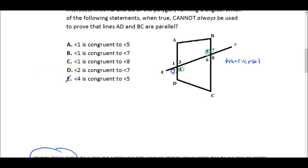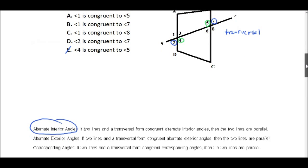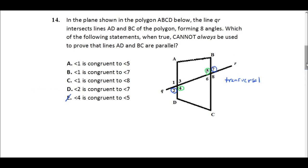Okay, how about if we had angle two and angle seven congruent? Could that not be used to prove they're parallel? Well, actually, they are part of the alternate exterior angles theorem, and that says if two lines and a transversal form congruent alternate exterior angles, then the two lines are parallel. Just as a reminder, congruent means equal, right? So D is out. Now D says that angles two and seven are congruent, and we know that if they are congruent, that can be used to prove AD and BC parallel.